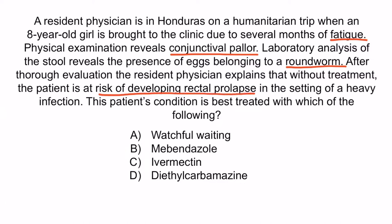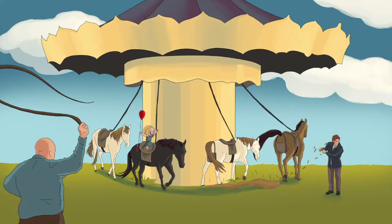Collectively, these findings provide enough information for us to conclude that the patient has a whipworm infection. So the correct answer is B, Mabendazole. From the image, recall that the pouch on the back of the horse should help you remember that whipworm can cause rectal prolapse in children. Also, the guy bending the phone should help you remember that whipworm should be treated with bendazoles.